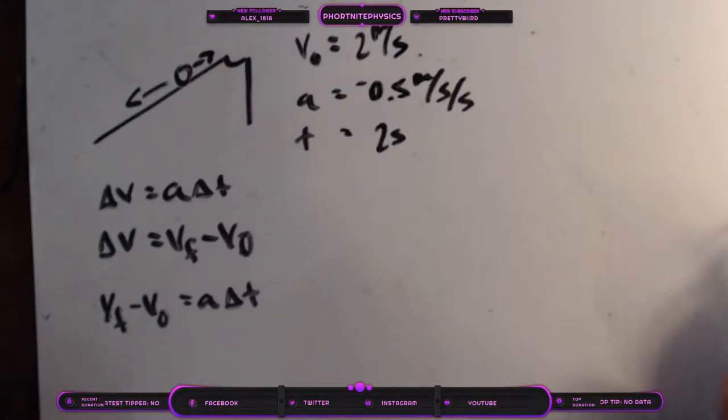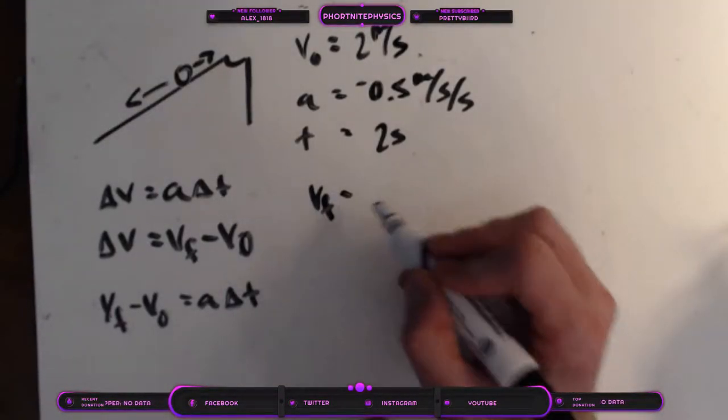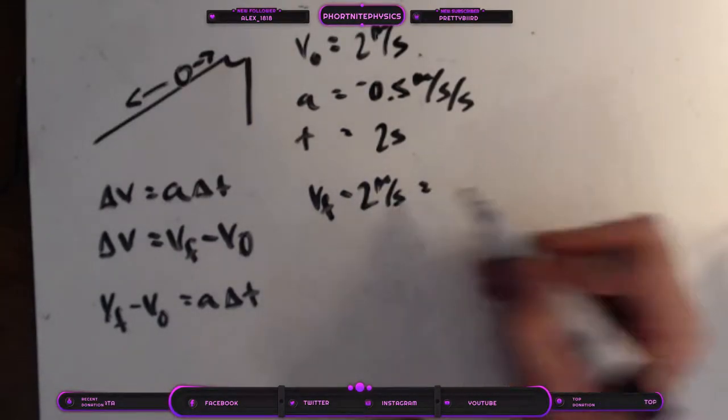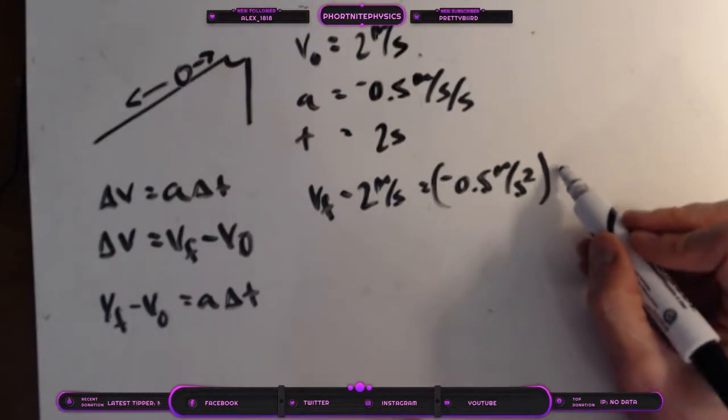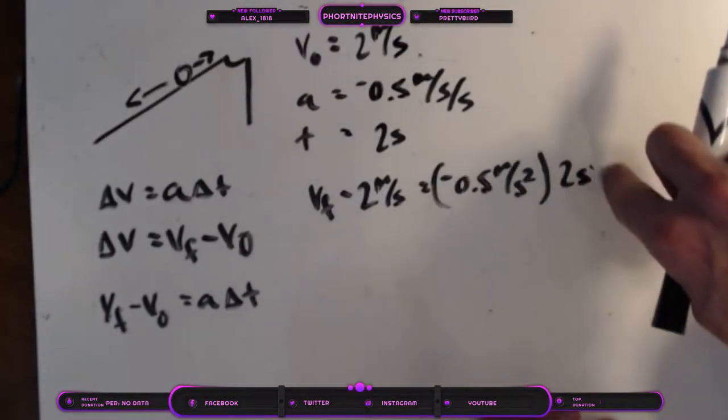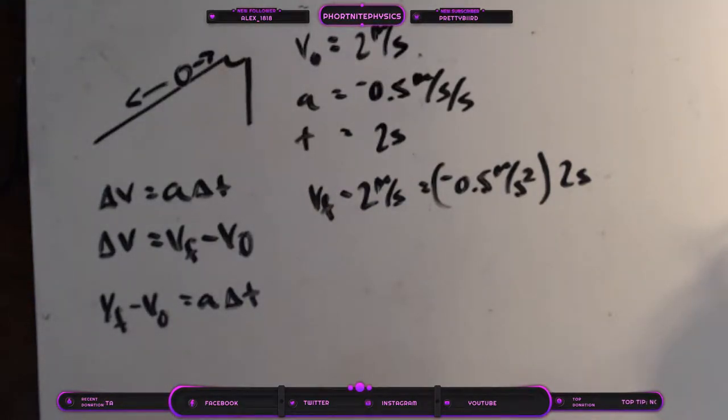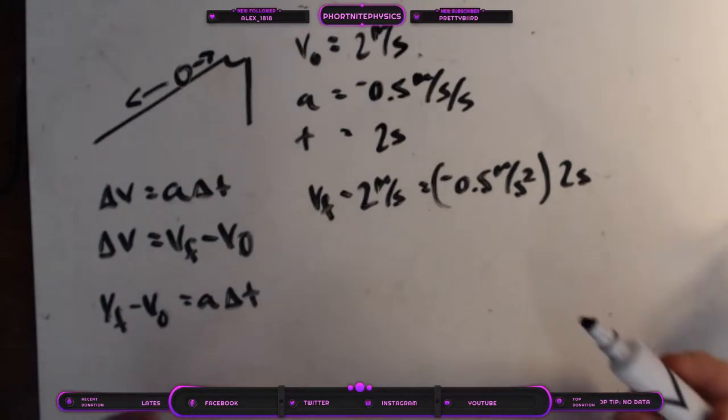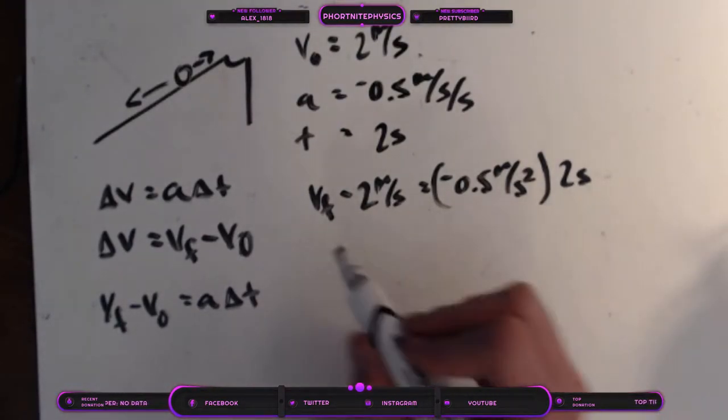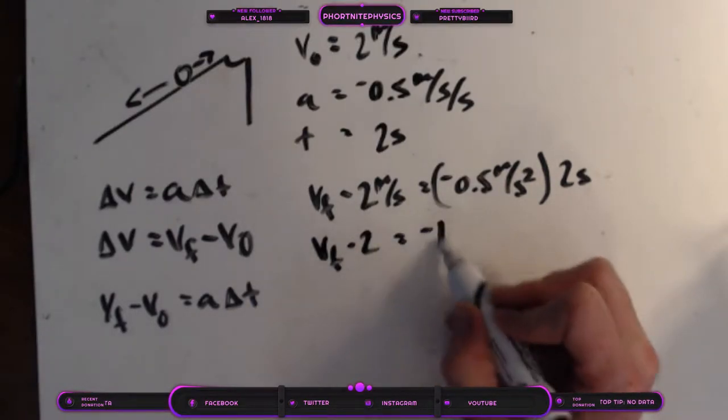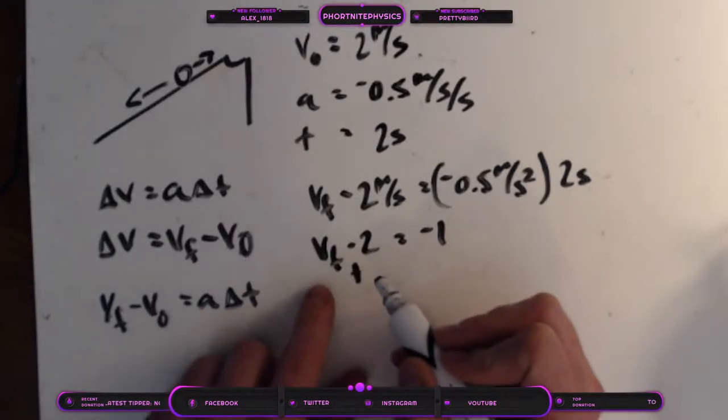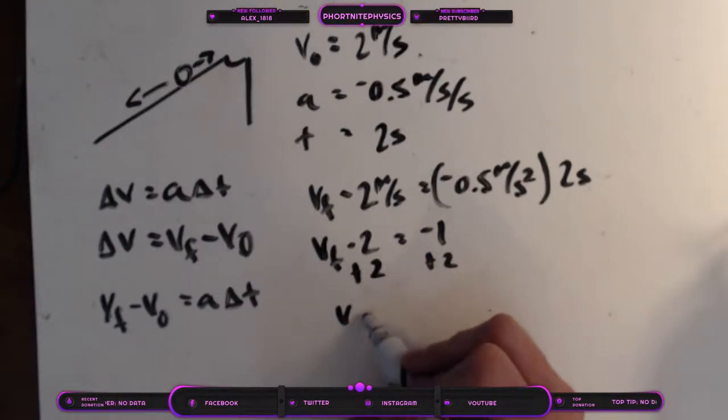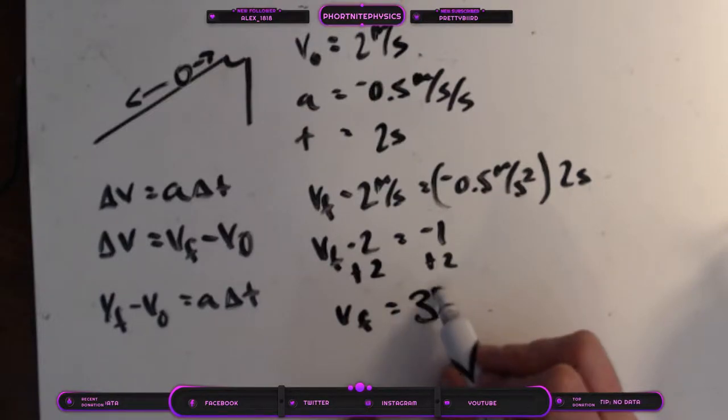Now if we just go ahead and substitute in all the numbers that we currently have, Vf minus 2 meters per second equals negative 0.5 meters per second squared multiplied by our 2 seconds. Now we can crunch all those numbers. We have negative 0.5 times 2, so Vf minus 2 equals negative 1. To get this Vf all by itself, we're going to have to add 2 to both sides. And we have Vf is equal to 3 meters per second.